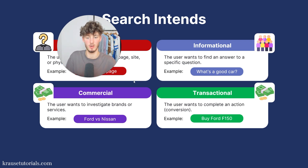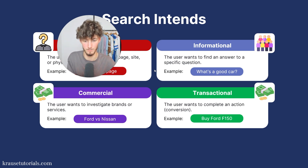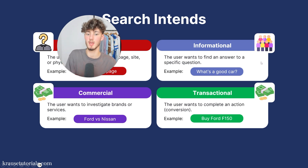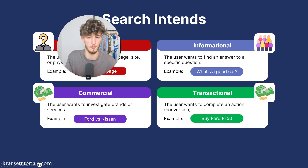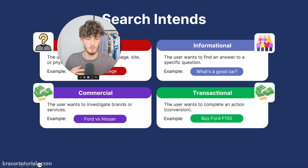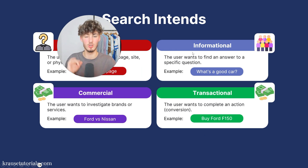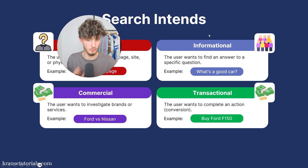Generally, informational searches often begin with how, what, where, when, why, who, top 10, and so on. Some examples would be "what's a good car," "how to tie a tie," "what is climate change," "who is the first person on the moon," and so on. In terms of monetizing, these aren't actually going to be ideal. However, you can still monetize these keywords, and they are super good for other reasons which I'm going to show later on.